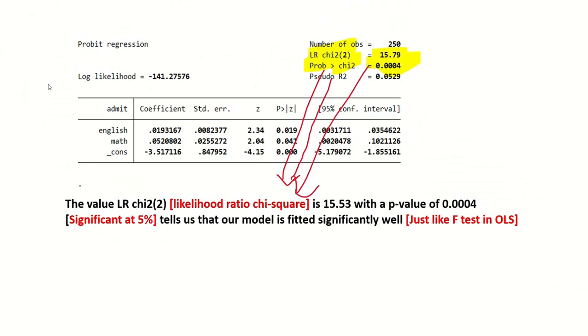From the results we can see that the value of LR chi-square, which is also called likelihood ratio chi-square, is 15.79 and its p-value is 0.0004, which is less than 0.05. This tells us that our model is fitted significantly well, just like the F-test in OLS.